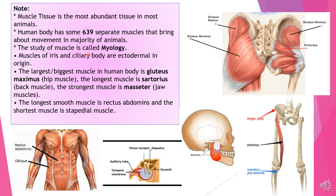The study of muscle is called myology. The muscles of the iris and the ciliary body are ectodermal in origin — these are exceptions, as muscles are generally mesodermal in origin. The largest and biggest muscle in the human body is the gluteus maximus — the hip muscle. The longest muscle is the sartorius.